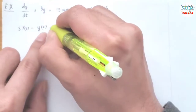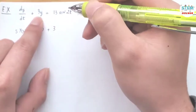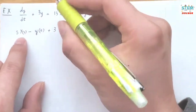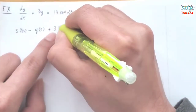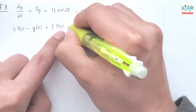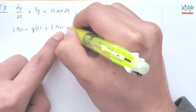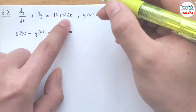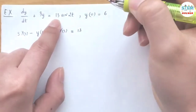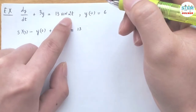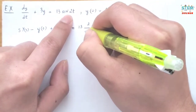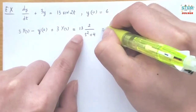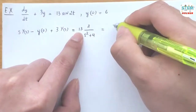For the plus 3 times y term, there's no derivative, which means we have s to the 0 times capital Y(s). The Laplace transform of 13 sine 2t: the 13 is a constant, and the Laplace transform of sine 2t equals 2 over s squared plus 4.